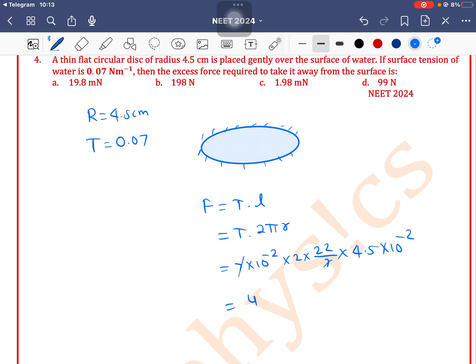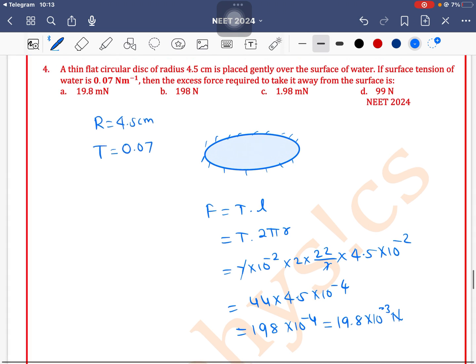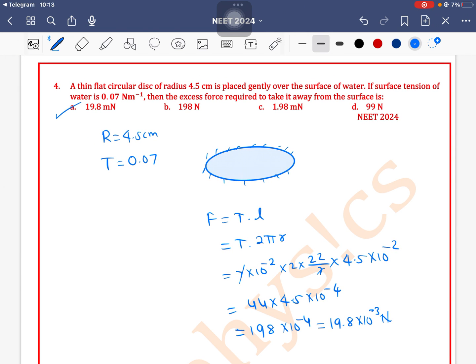cancel out. This gives 44×4.5×10^-4. If we solve for 44×4.5, we get 198×10^-4, which means 19.8×10^-3. This equals 19.8 milliNewtons. Option A is the correct one.